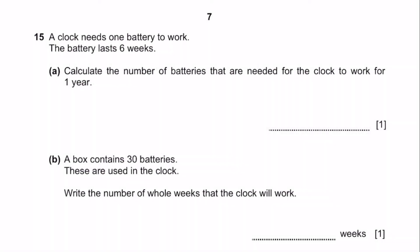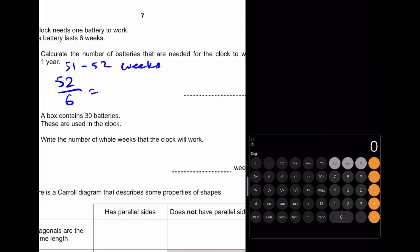Question 15. A clock needs one battery to work. It lasts six weeks. Part A: Calculate the number of batteries that are needed for the clock to work for one year. One year is approximated as around 51 to 52 weeks. And the number of batteries needed is going to be 52, or you can use 51. In this case, the result actually does not matter. So divide by six. Let's get a calculator to do that. 52 divided by six to get 8.66 dot dot dot. And because we cannot use half a battery, or in this case, 0.66 of a battery, if you have a full battery, you can round this up to nine batteries. And that'll be our answer.